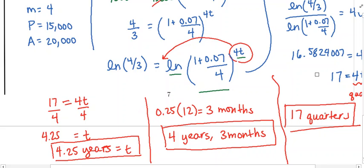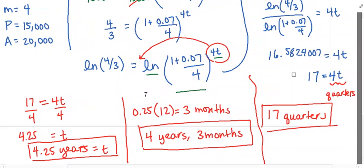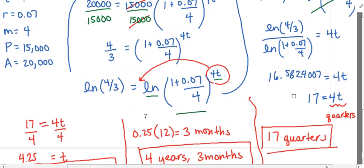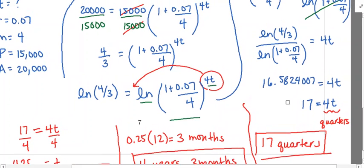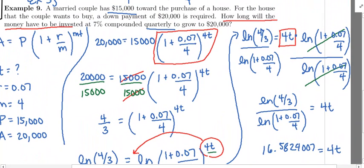If you get confused, just leave it as 17 quarters. But if you're trying to make sense of it — like how long is this — you can take the 17 quarters and convert to years: four whole years and then a quarter of another year. These are all acceptable answers. Hopefully that's given you another example of how to solve for time: isolate the quantity raised to the power, take the natural log of both sides, bring the power down in front. Let's move on to example 10.